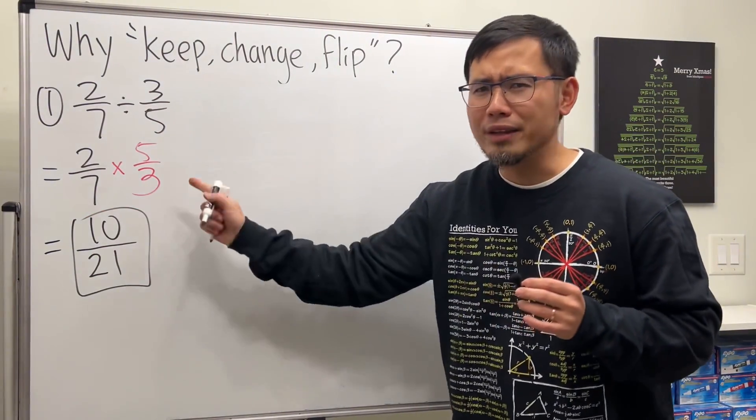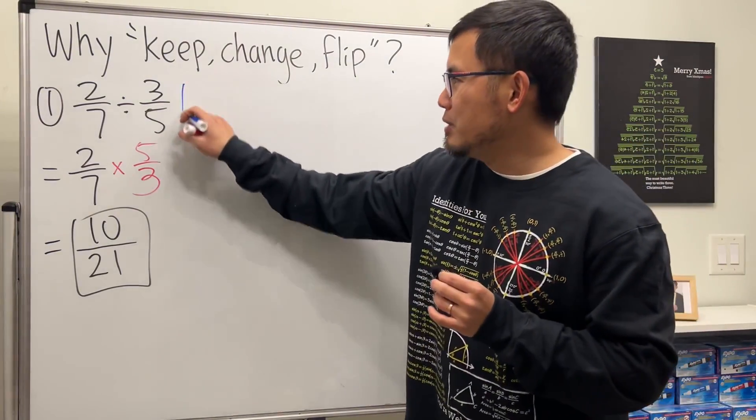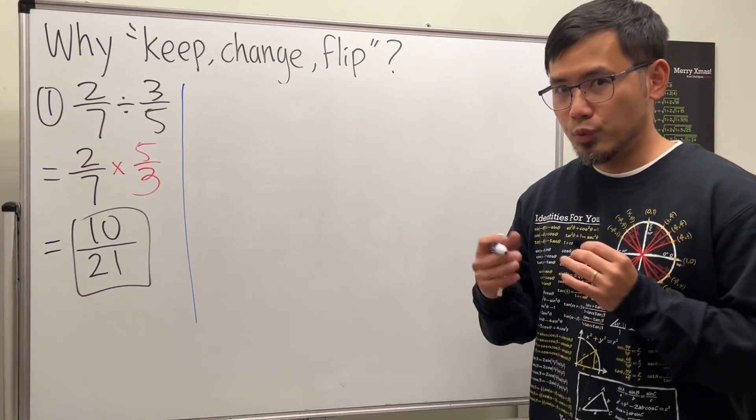And we do this all the time. But why does this work? Well, let me explain. But let me show you a regular division with whole numbers first.